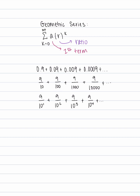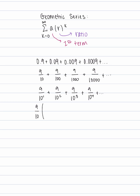But our issue is we want to start with an index of 0, not of 1. So let's go ahead and factor out a 9 tenths. Now we can see a series with an index starting at 0.